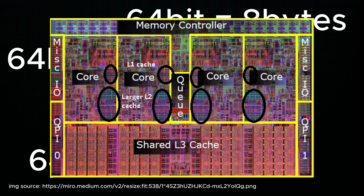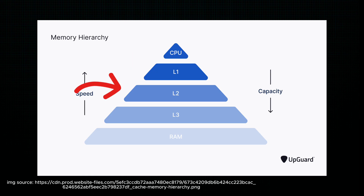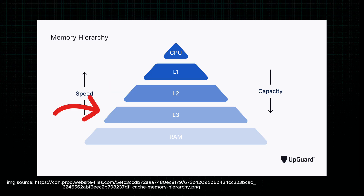Caches are slower than registers. Located on or very close to the CPU, cache stores frequently accessed data from the main memory, typically RAM. This cache is further divided into levels: L1 — the fastest and smallest, integrated into each CPU core; L2 — slower but larger, which can be on the CPU core or on the chip; and L3 — the largest and slowest, typically shared by all CPU cores.